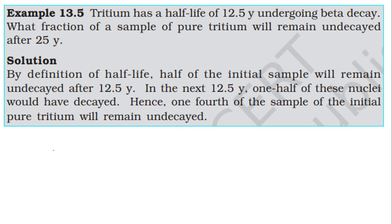The number of particles undecayed after some years is given by N = N₀ / 2^n, where n is the number of half-lives. The number of half-lives n is equal to total time divided by the half-life period.